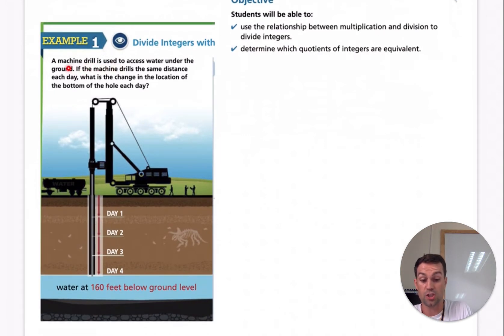A machine drill is used to access water under the ground. If a machine drills at the same distance each day, what will the change of location at the bottom of the hole be each day? So what will this difference be at each day?